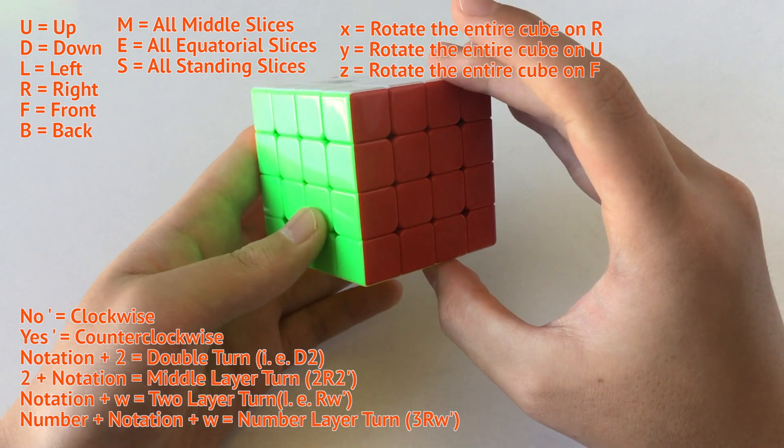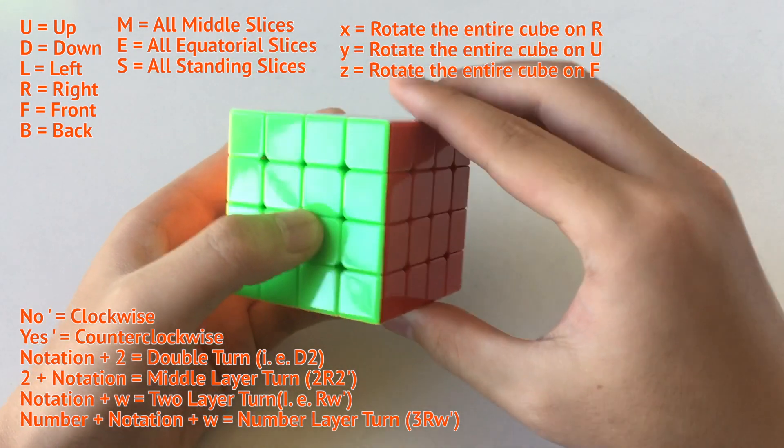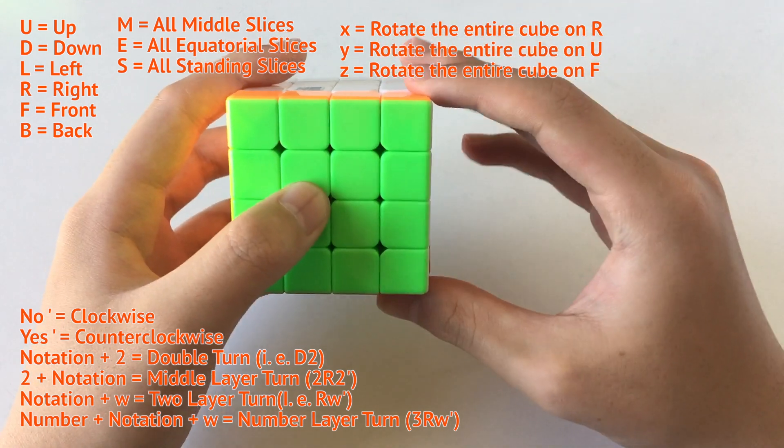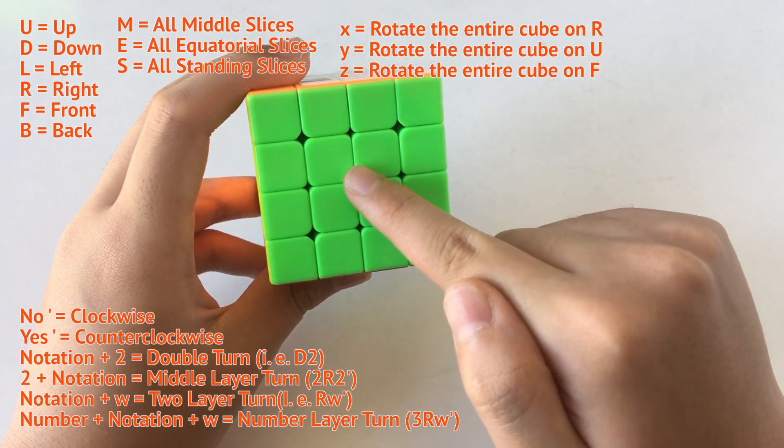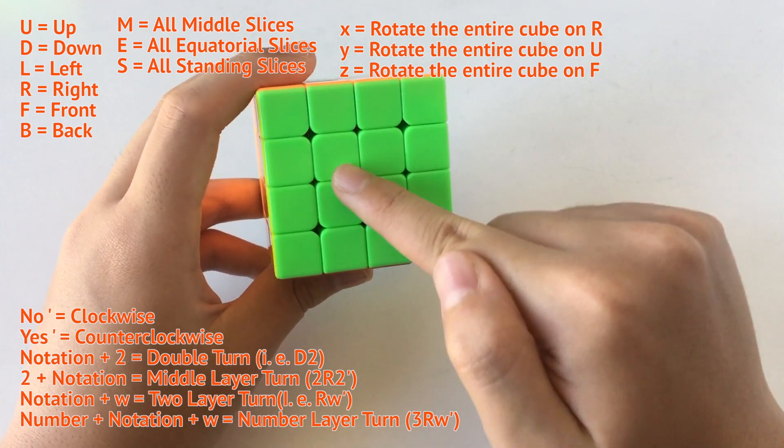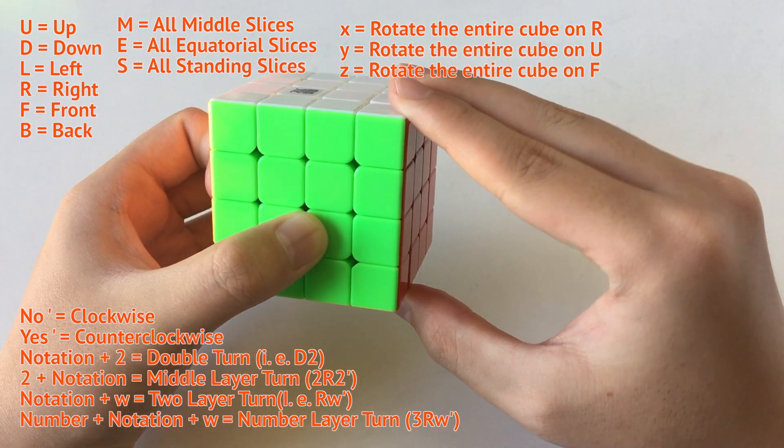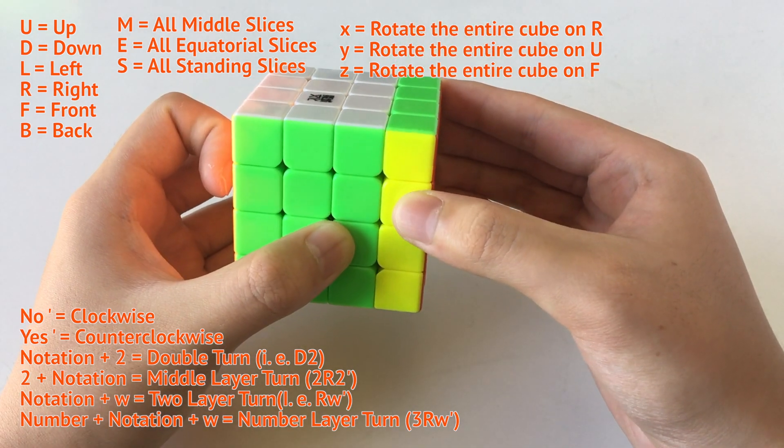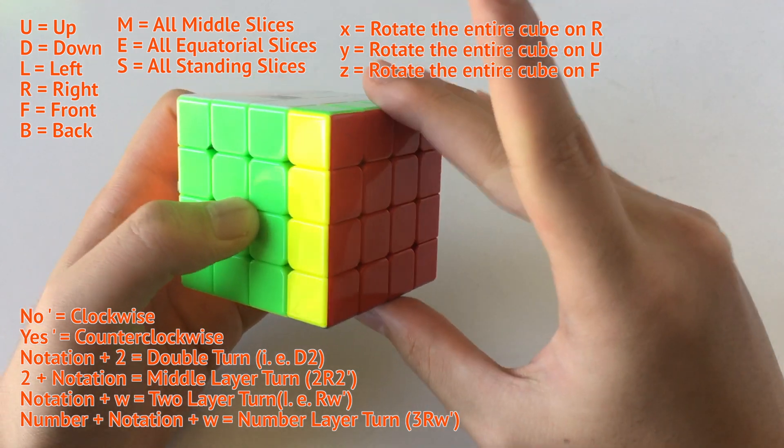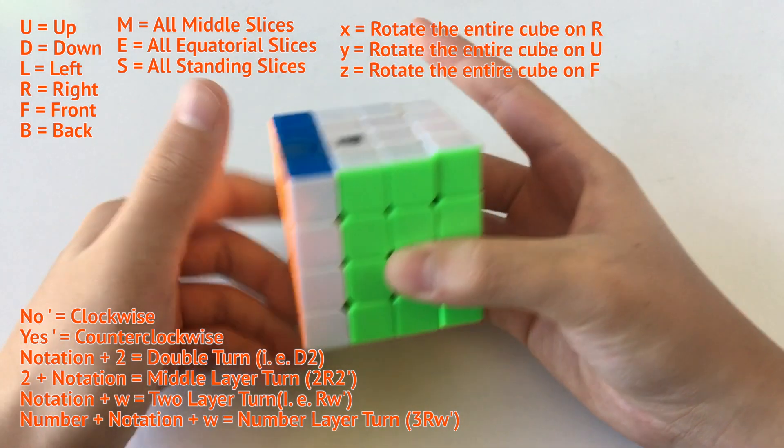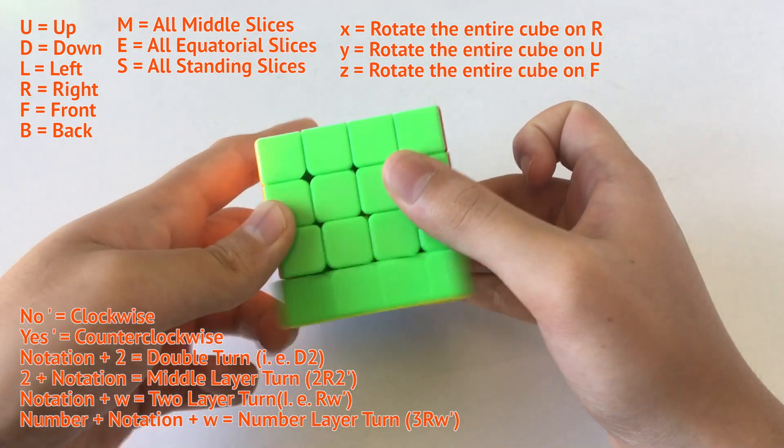So basically clockwise will be no apostrophe. For example, clockwise like that. And then counterclockwise will be an apostrophe. For example, this is the front side, so F. And then apostrophe would be front side counterclockwise. And then R would be right side clockwise. Because when you're watching from the right side, it will be clockwise like that. L is going to be like that. U is going to be like that. D is going to be like that.